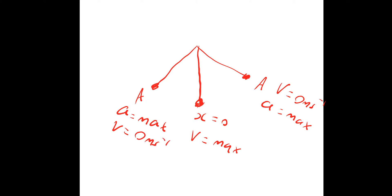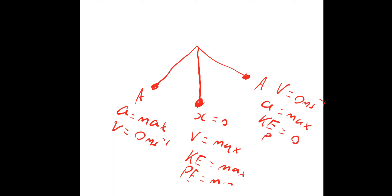In terms of energy: at the equilibrium position, the kinetic energy — half mv squared — is a maximum since we have maximum speed, so potential energy is a minimum. At the extremes, at the amplitudes, kinetic energy is zero and the potential energy each side is a maximum. The same applies for the oscillating mass block on the previous slide. We will look at that in more detail later on.